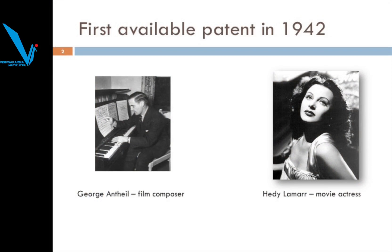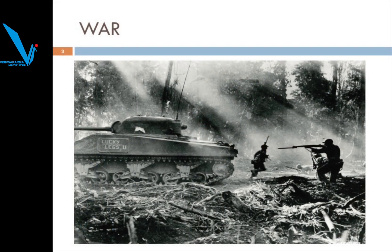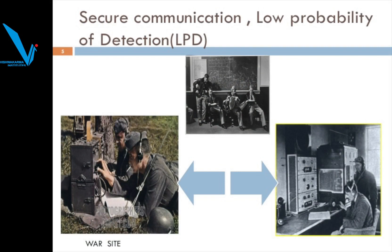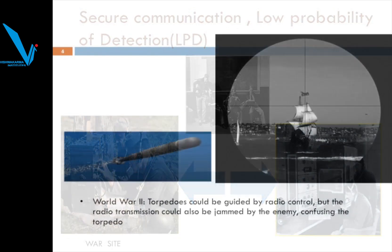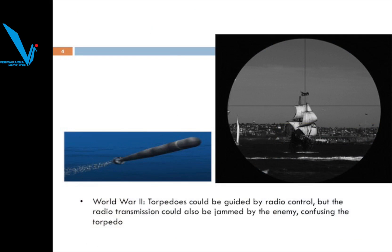MGM movie star Hedy Lamarr and music composer George Antheil were awarded a US patent in 1942 for their secret communication system — this was the frequency hopping spread spectrum technique. These spread spectrum techniques evolved during World War Two, where the necessity was to maintain secrecy and secure communication. Torpedoes could be guided by radio control, but radio transmissions could be jammed by enemies, confusing the torpedoes.